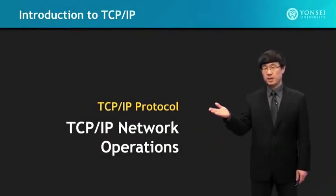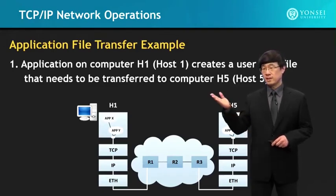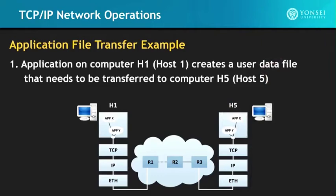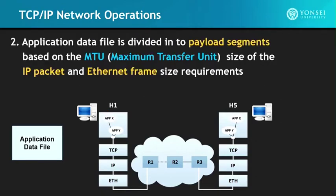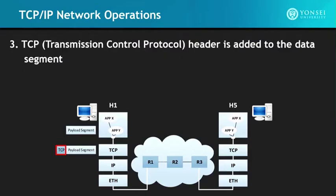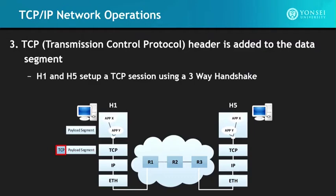Now let's look at the TCP/IP network operations through an application file transfer example. The application on computer H1 (host 1) creates a user data file that needs to be transferred to computer H5. The application data file is divided into payload segments based on the maximum transfer unit — the MTU size of the IP packet and the Ethernet frame size requirements. Then TCP header is added to the data segment, and H1 and H5 set up a TCP session using a three-way handshake.